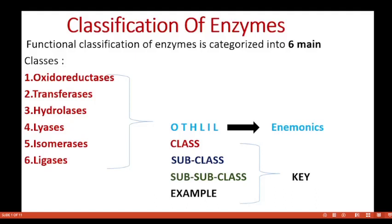Classification of Enzymes. Functional classification of enzymes is categorized into six main classes. These are oxidoreductases, transferases, hydrolases, lyases, isomerases, and ligases.